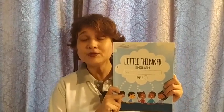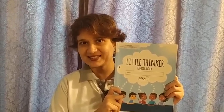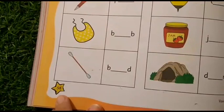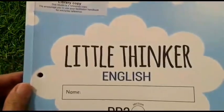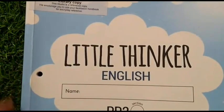This is video 2. In this video, we will do one page from Little Thinker English, where we will form CVC words by placing the correct vowel in the right place. Now, we will do page number 58 from the book Little Thinker English. Let's begin.